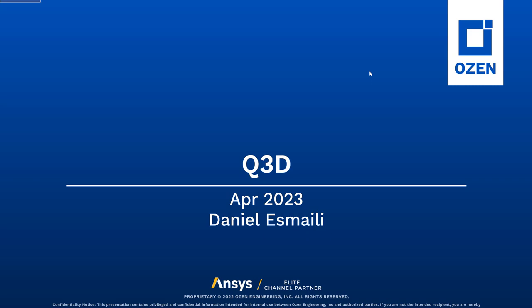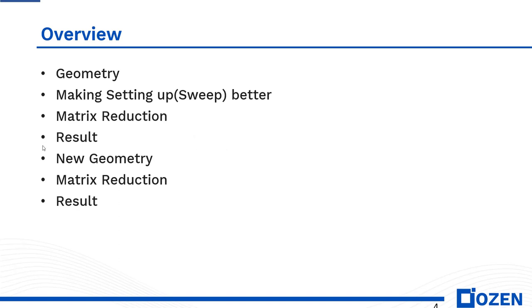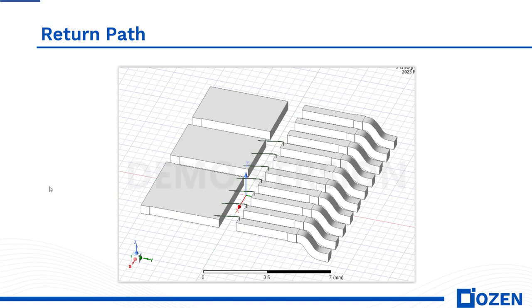Hello everyone, this is Daniel Smalley and on behalf of Fuzzer Engineering Incorporation I'm going to talk about Q3D. This is another video in the Q3D series. In the last one we talked about joining connections, and this time we're going to talk about the return pad and also using matrix reduction to see how we can achieve that goal. To make it simple, we made this die as a copy of the bigger one.